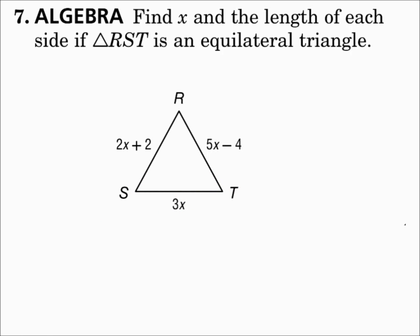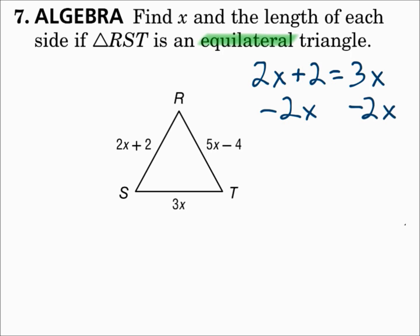Number seven: find x and the length of each side if triangle RST is an equilateral triangle. Well, if it's equilateral, then all sides are congruent, so we can pick any two sides and make them equal each other — like 2x + 2 = 3x. Subtract 2x from each side to get 2 = x. So x is 2.